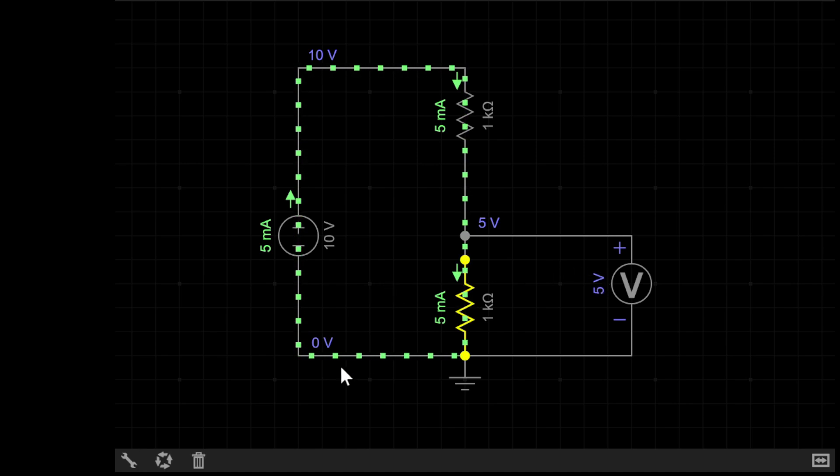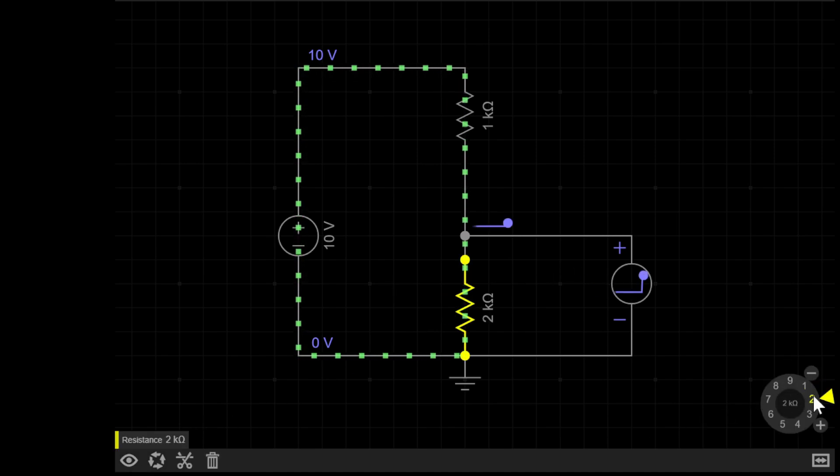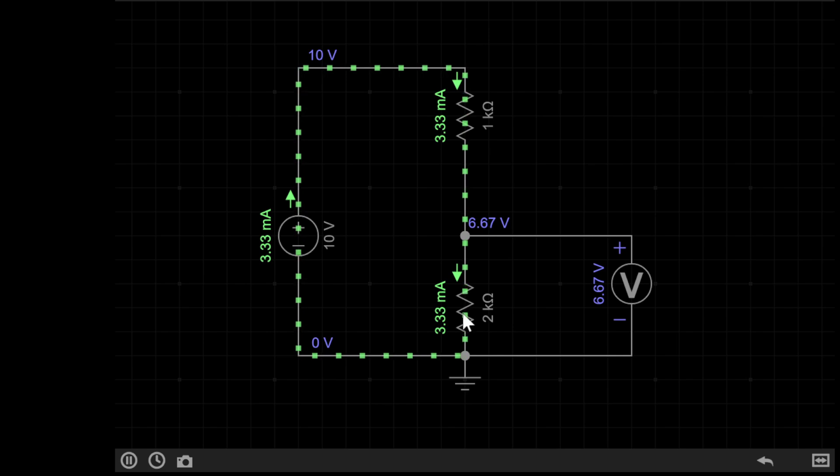However, if we replace one of these resistors with, say, a 2k, just double its value, you'll see that because there's more resistance here, the voltage drop increases and we have 6.67 volts.